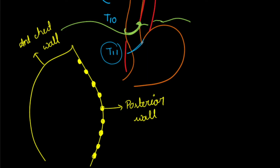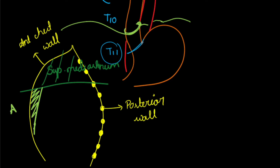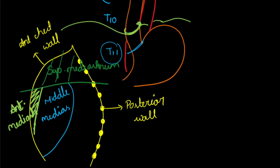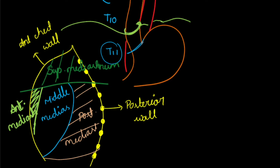Before going into detail with the anatomy of the esophagus, we will learn about the different types of mediastinum. Looking at a cross section of the chest wall: the upper part is called the superior mediastinum, the small front part forms the anterior mediastinum, the central part forms the middle mediastinum, and the back part forms the posterior mediastinum. The esophagus runs through the superior mediastinum and posterior mediastinum, in front of the vertebral column, before entering the diaphragm to reach the abdomen.